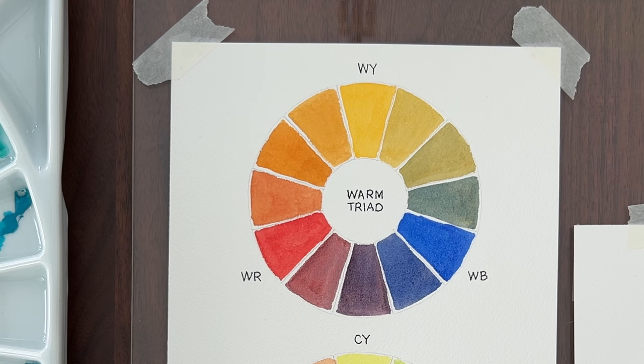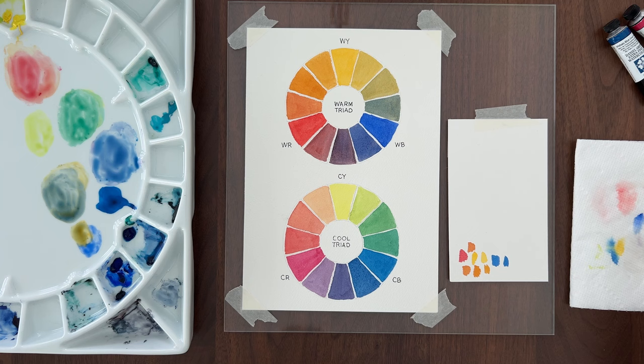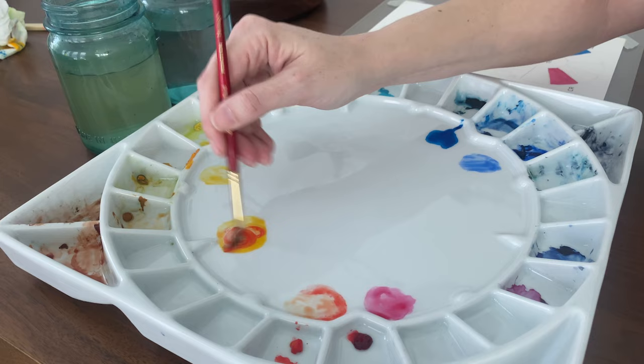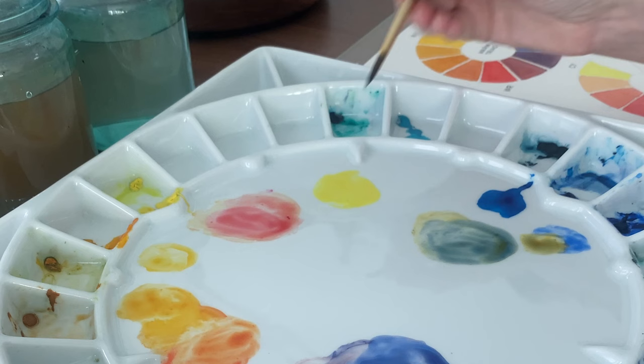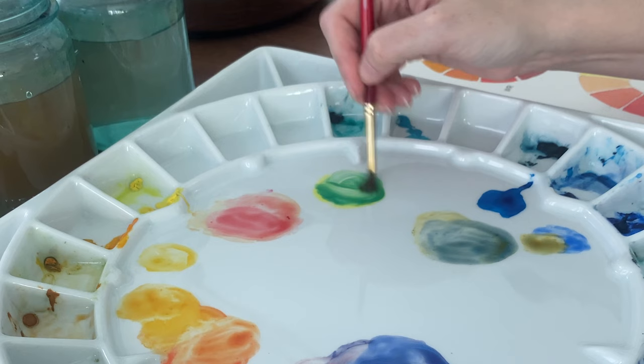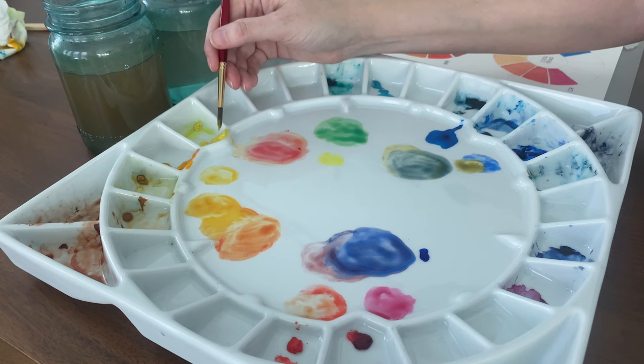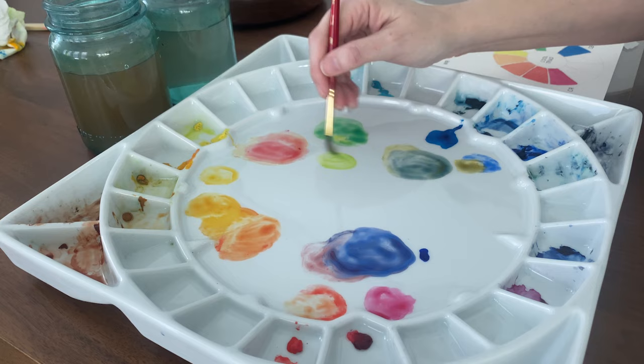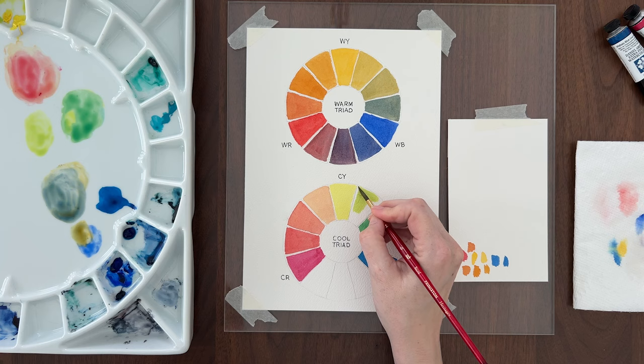By making a warm and cool version, you can see how your different primary colors mix. When you're mixing the secondary colors, it's not a 50-50 mix. The red or blue can easily overpower the yellow. It's best to start with the weaker color and slowly add the stronger color until you get the secondary color you want. For the tertiary colors, I'm going to again start with the lighter color and mix in more of the secondary color until I get that intermediate color.